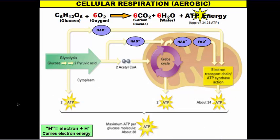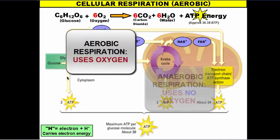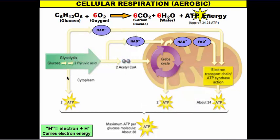Cell respiration can be described in two different ways: aerobic respiration and anaerobic respiration. Aerobic respiration is the process in which we use oxygen to make energy. Anaerobic respiration is the process in which we don't use oxygen to make energy. Our body uses both, and we'll touch on that in our next vodcast. In this vodcast, we're going to talk about aerobic respiration.